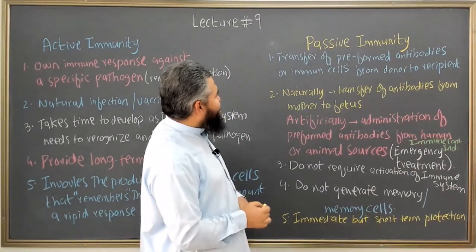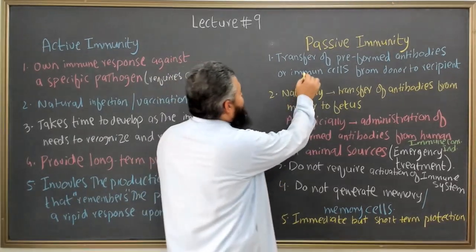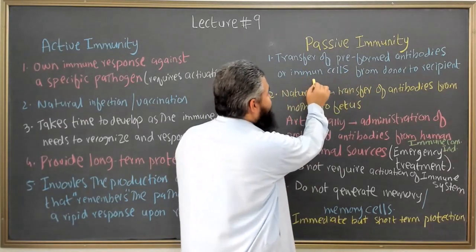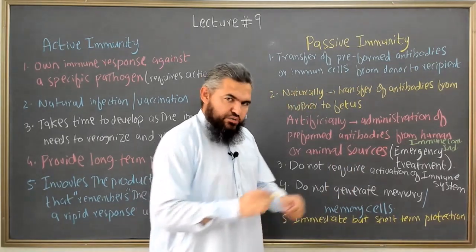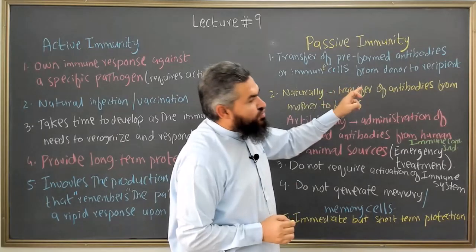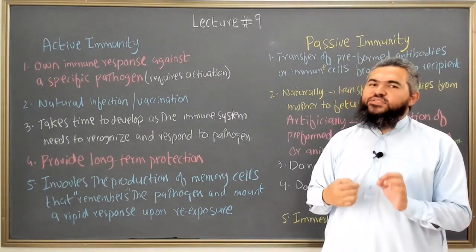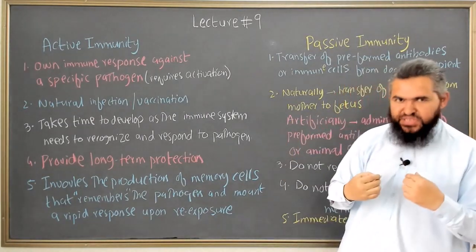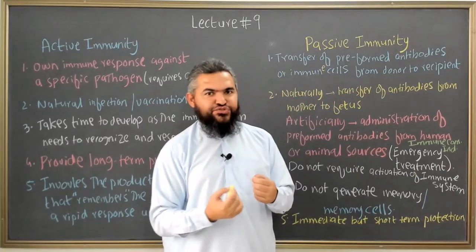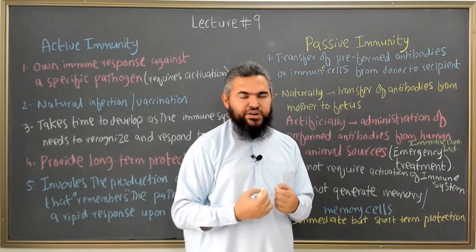Now if you compare that with passive immunity — in passive immunity, what you do is transfer preformed antibodies or immune cells from a donor to a recipient. In both cases you have antibodies and immune cells, but the difference is that in active immunity your body is making its own antibodies and T cells, whereas in passive immunity you are getting preformed antibodies or immune cells from a donor. The recipient is not making their own antibodies or immune cells.